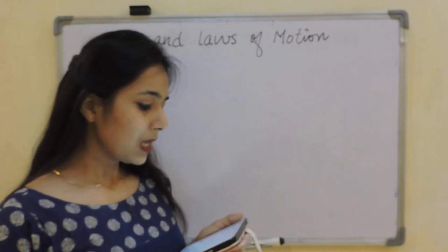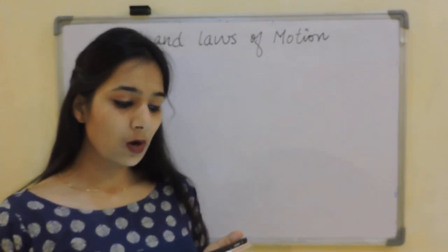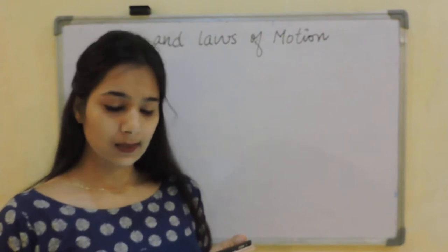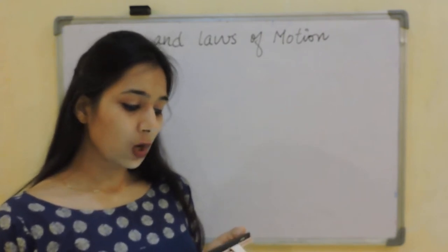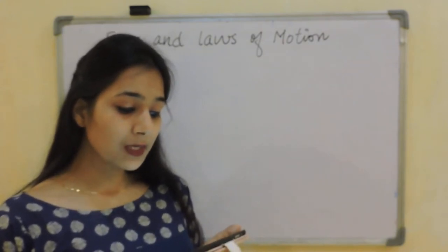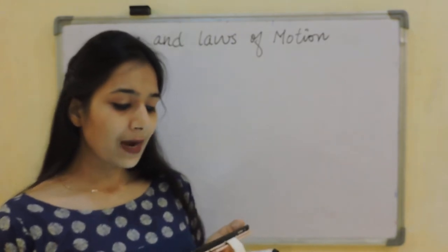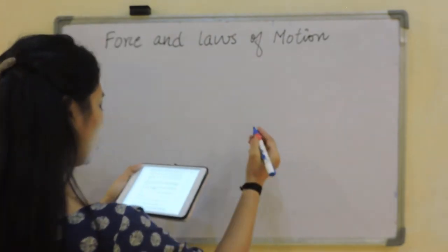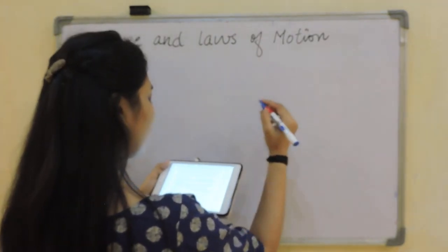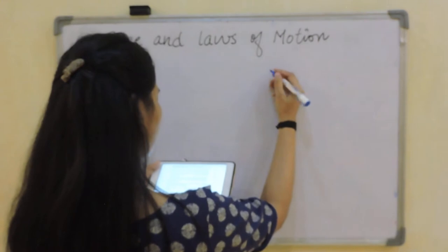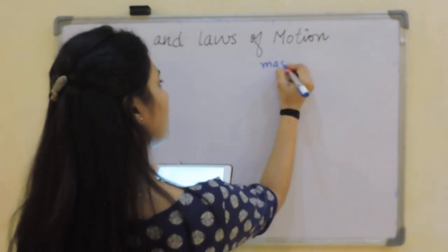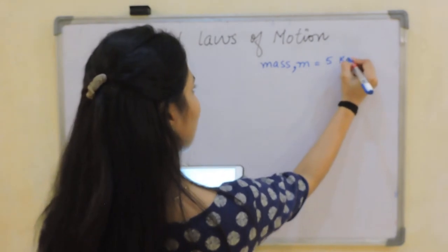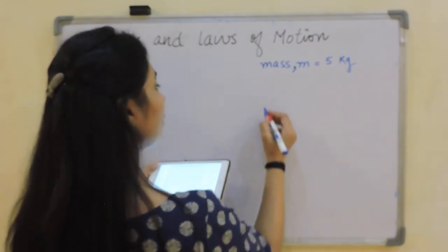Next question: a constant force acts on an object of mass 5 kg for a duration of 2 seconds. It increases the object's velocity from 3 cm/s to 7 m/s. Find the magnitude of the applied force. Mass M = 5 kg, time T = 2 seconds. Initial velocity U = 3 cm/s — note the unit is centimeters, so we need to convert to meters.